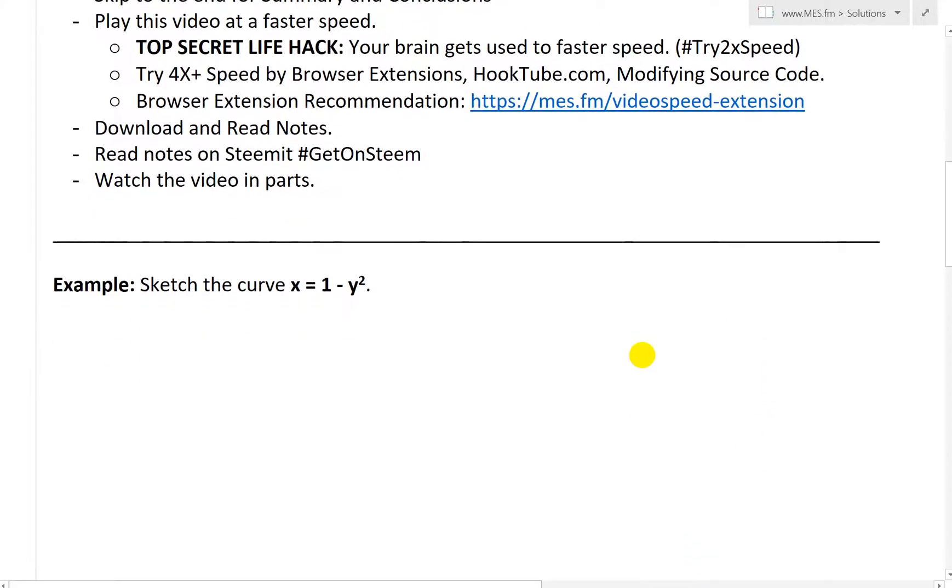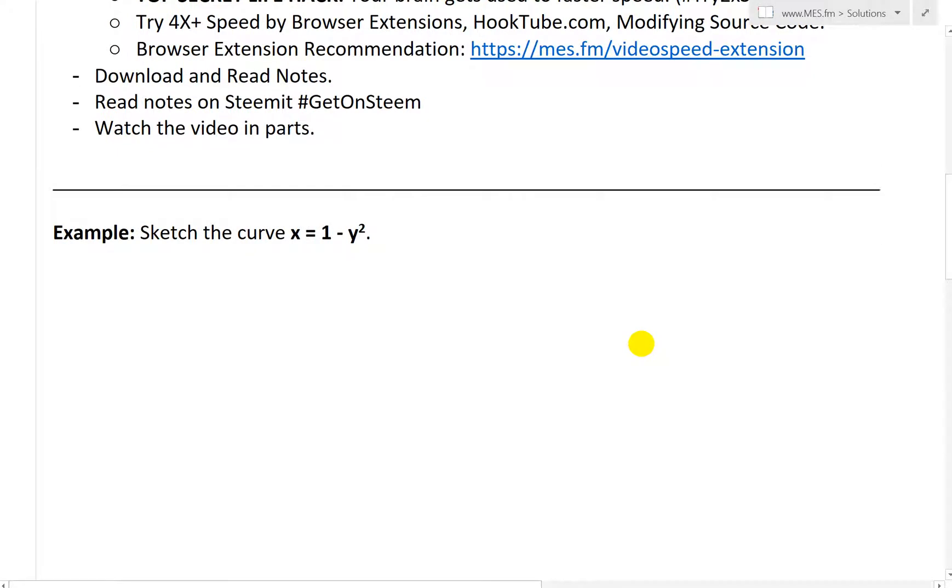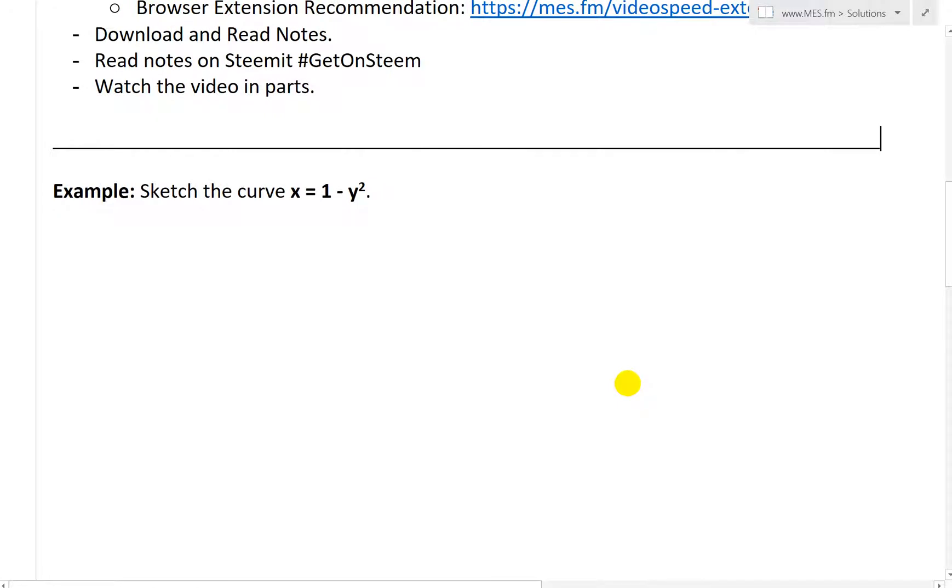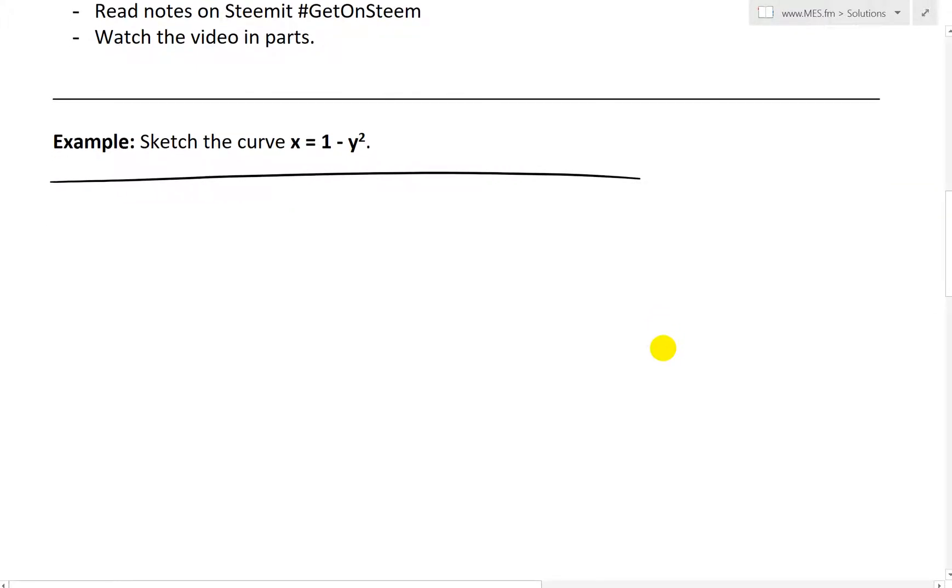This example states sketch the curve x equals 1 minus y squared. Now this is a pretty easy example to sketch, but what I'm going to do is just follow the steps in the shifted conics methodology that I went over, just because it's good to understand how we can shift them because it's not always going to be this simple.